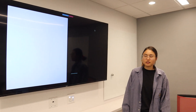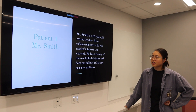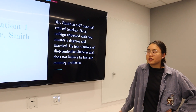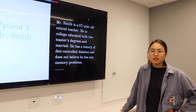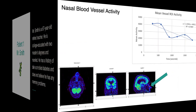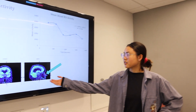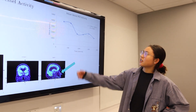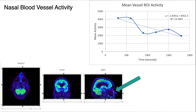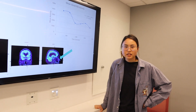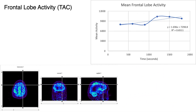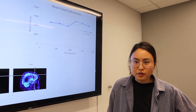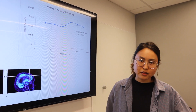Our first patient is Mr. Smith, a 67-year-old retired teacher. He is college-educated with two master's degrees, is married, has a history of diet-controlled diabetes, and does not believe he has any memory problems. He also has a pet gecko named Chad. We first isolated the activity of the blood vessel — in this case the nasal artery — by analyzing the concentration of FDG over time. The FDG concentration decreases over time as expected because tissue extracts FDG from the bloodstream. We then did the same for the frontal lobe, and we see that FDG activity increases over time and then eventually plateaus, due to FDG being phosphorylated and remaining trapped within the cells.